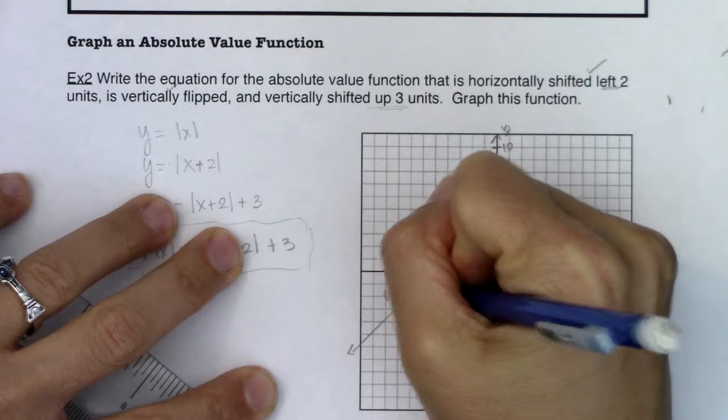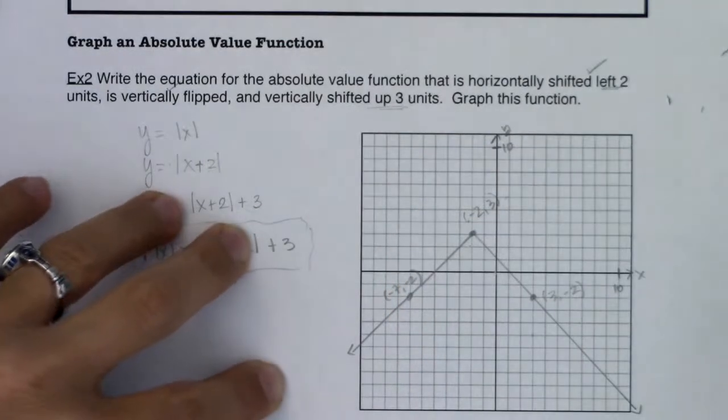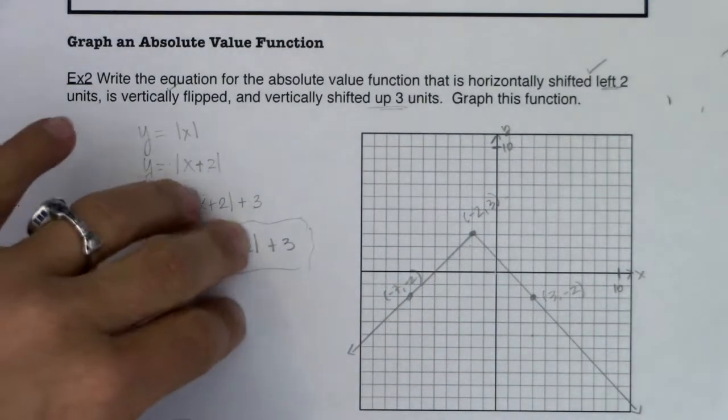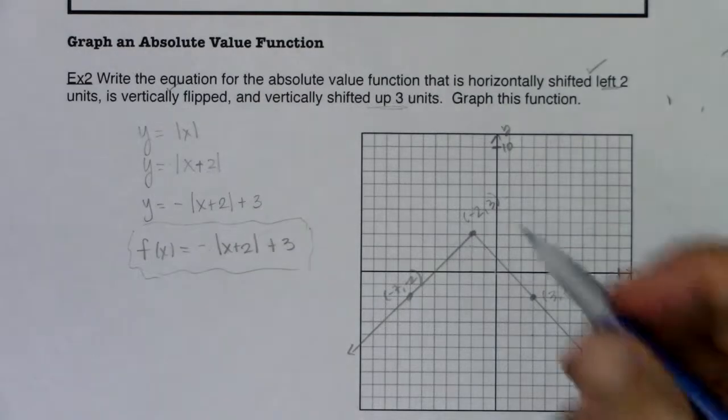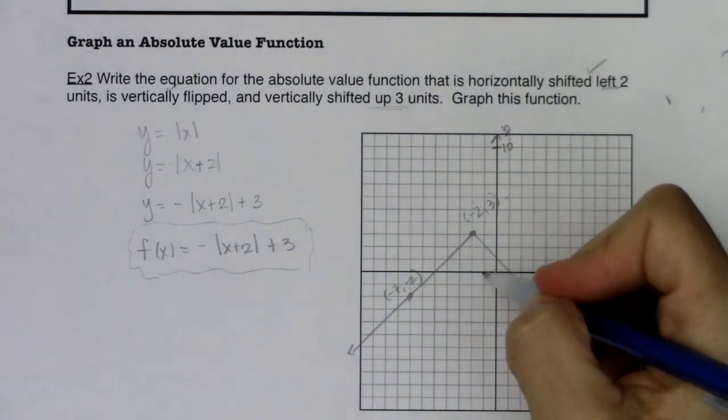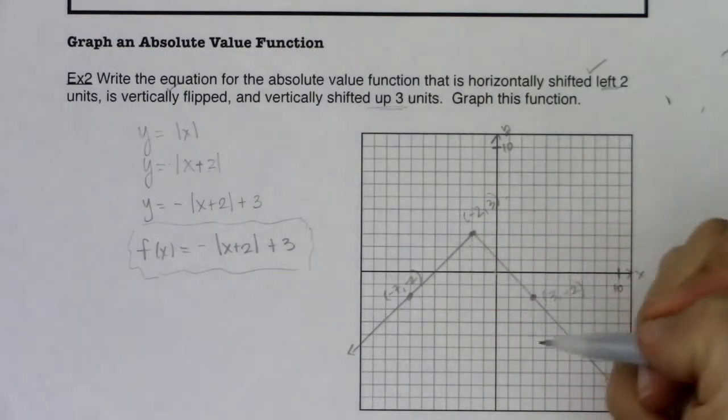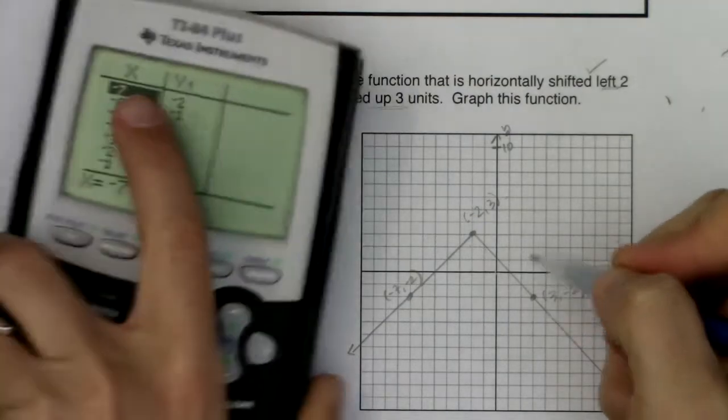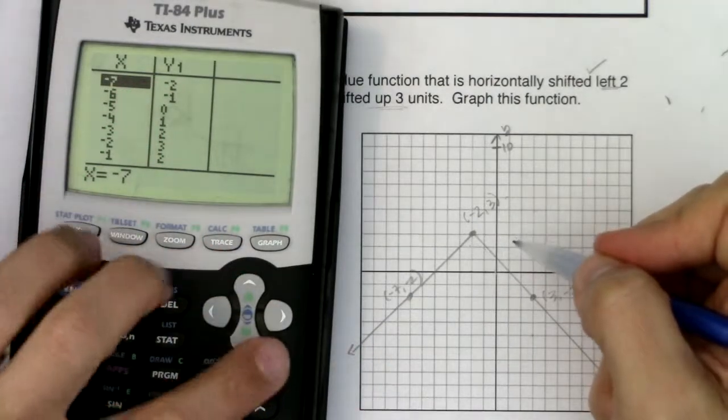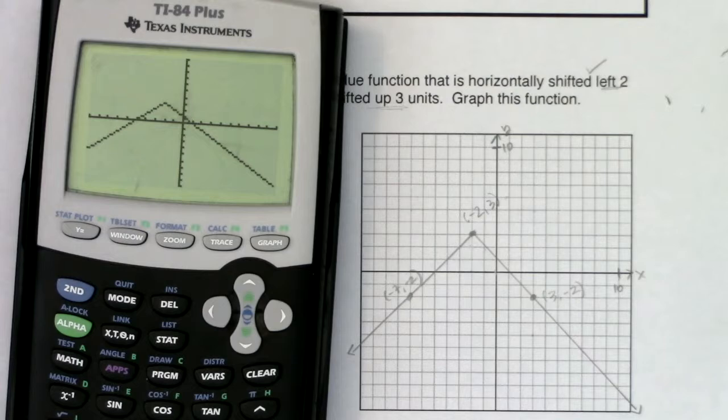All right, we thought this was negative 7, negative 2. All right, so I've got a pretty good looking absolute value function. It has been shifted left two units, up three units, and reflected. All right, and the graph I have on my paper, oops, excuse me, is matching the graph I have on my calculator, so I'm feeling pretty good about that.